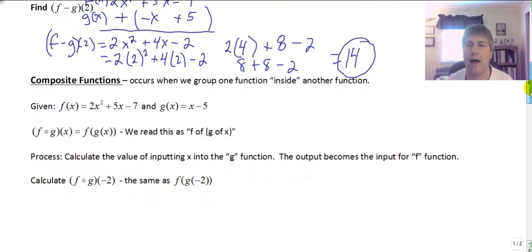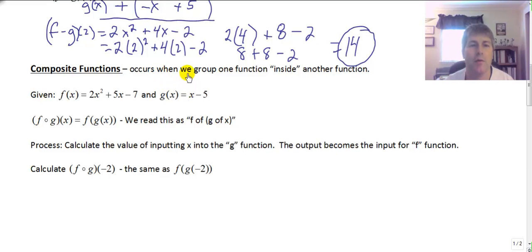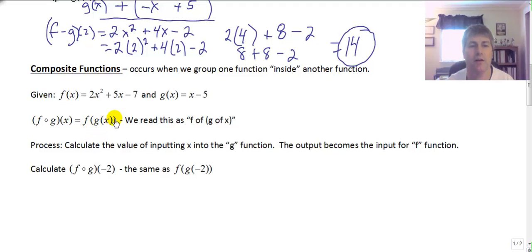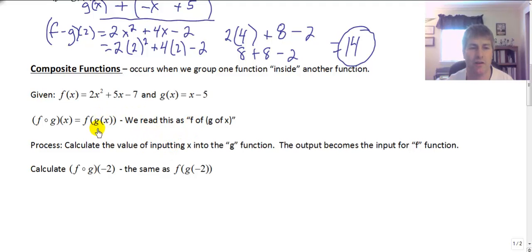We have also done composite functions — this occurs when we group one function inside of another. So our two functions are f of x equals 2x squared plus 5x minus 7, and g of x equals x minus 5. You'll see f of g of x in your text, which is also written as f composed with g of x. We find g of x first, then input that result into f. So these two expressions are equivalent — we start with the innermost function, the innermost command, and that becomes our input for f.